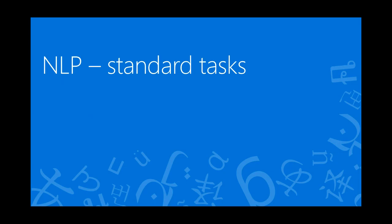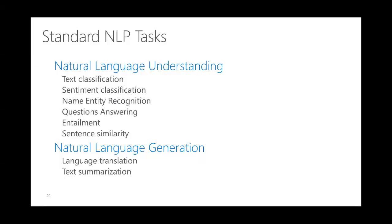Now let's look at the standard tasks in NLP. NLP tasks can be grouped into two groups: natural language understanding (NLU) and natural language generation (NLG). Natural language generation includes language translation and text summarization — essentially generating text in a different form. Natural language understanding includes text classification, sentiment classification, named entity recognition, question answering, entailment, and sentence similarity. If you're interested in NER or text classification, I've previously done talks on those available on the Reactor YouTube channel.